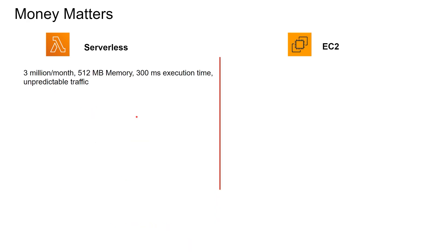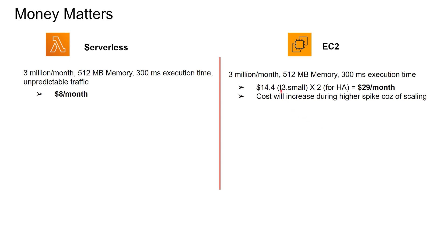Let's look at a cost use case. Say a Lambda runs 3 million times a month, with 512MB of memory and each execution lasting around 300 milliseconds, and traffic is unpredictable. Using the Lambda cost calculator, you pay $8 per month. To accommodate the same traffic with EC2, you need two T3 small instances for high availability, costing around $29 per month. However, since traffic is unpredictable, cost will increase during higher spikes because the entire VM scales and you pay for the full EC2 regardless of CPU utilization.